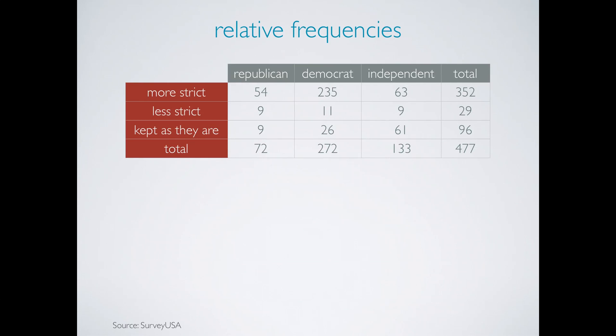Instead, we need to calculate relative frequencies of Republicans, Democrats, and Independents who want more strict gun laws, and compare these relative frequencies to each other.